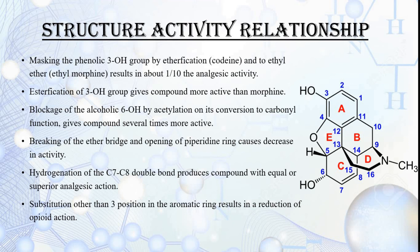To summarize the structure-activity relationships: esterification of the 3-OH group gives a more active compound compared to morphine; conversion of the OH group to a carbonyl gives a compound several times more active than morphine; breaking the ether bridge and opening the piperidine ring causes a decrease in activity; hydrogenation of the double bond at positions 7 and 8 produces equal or superior analgesic action; and substitution in the aromatic ring at positions other than the third results in reduction of opioid actions.